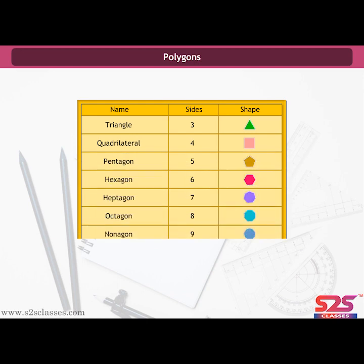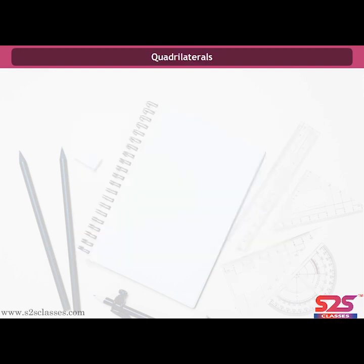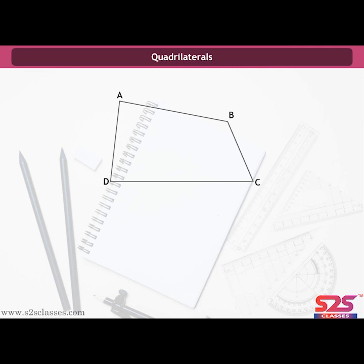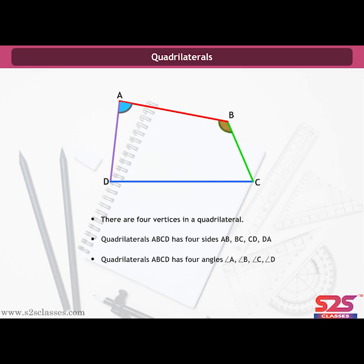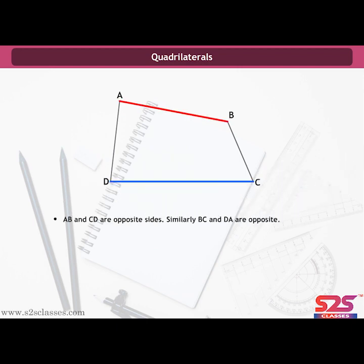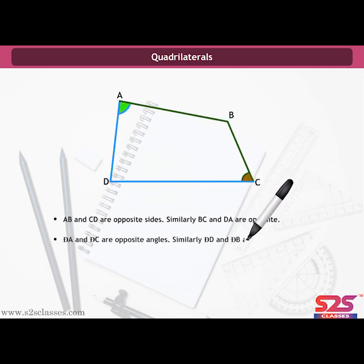Some polygons with their number of sides: a four-sided polygon is called a quadrilateral. It has four sides and four angles. Quadrilateral ABCD has four vertices — A, B, C, and D — and four sides AB, BC, CD, and DA. It also has four angles: angle A, angle B, angle C, and angle D. The sides AB and CD are opposite sides; similarly BC and DA are opposite sides. Angle A and angle C are opposite angles; angle D and angle B are also opposite angles. Angle A and angle B are adjacent angles.